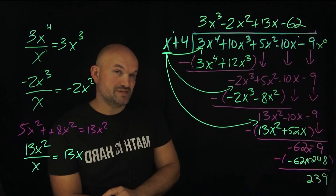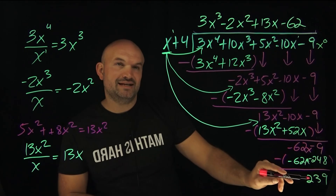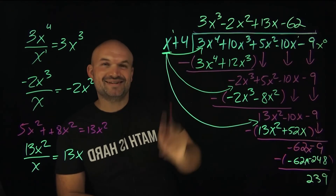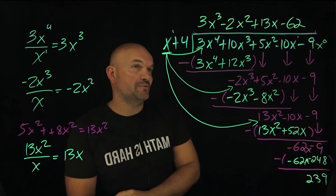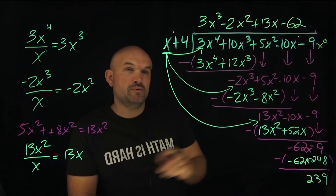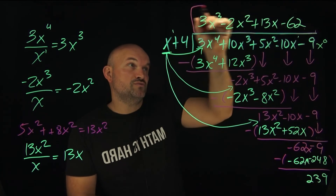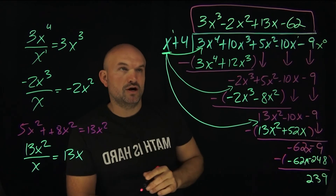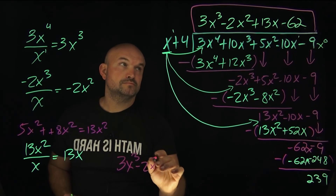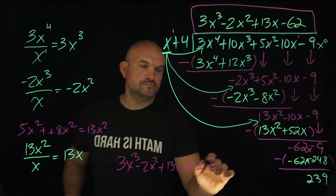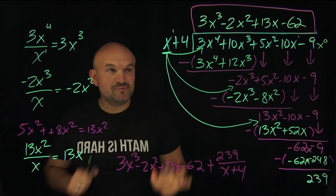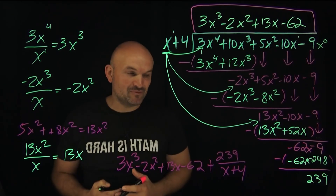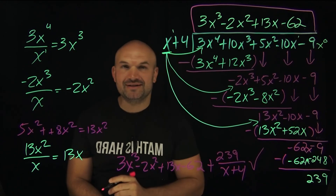We're done because x does not divide into 239 — it has no x variable with it, so this is our remainder. We write our quotient — 3x cubed minus 2x squared plus 13x minus 62 — and place the remainder over the divisor. And there you go — we've now applied polynomial long division slowly, methodically, and calmly. I hope this video was helpful for you. Cheers.